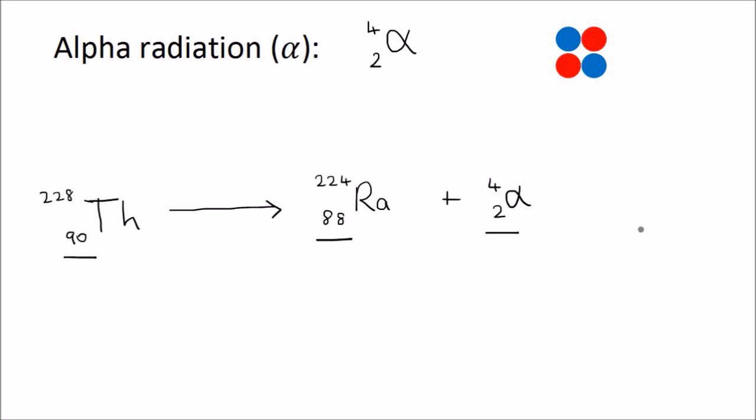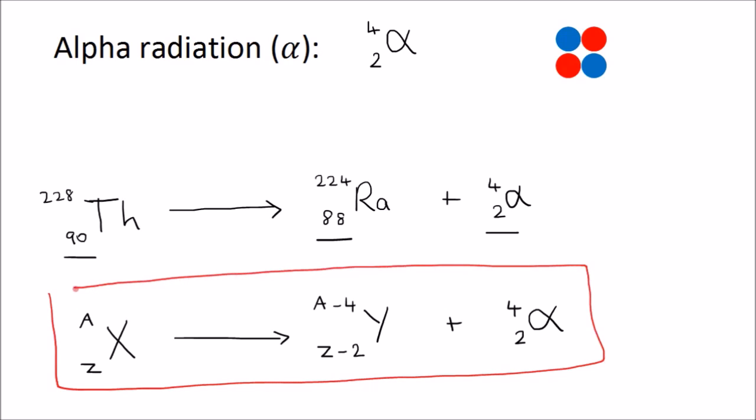This is the general formula for alpha emission. Any element X with mass number A and atomic number Z will decay into another element Y, where the mass number will be smaller by 4 and the atomic number smaller by 2. In that process, an alpha particle with mass of 4 and atomic number of 2 will be given off. If you can remember this general formula, you'll be able to represent any alpha emission in equation form.